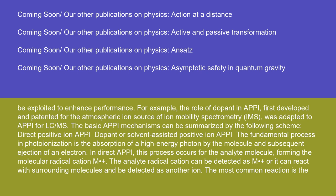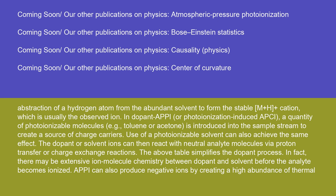For example, the role of dopant in APPI — first developed and patented for the atmospheric ion source of ion mobility spectrometry (IMS) — was adapted to APPI for LC-MS. In direct positive ion APPI, photon absorption by the analyte molecule forms the molecular radical cation M+•, which can be detected as M+• or react with surrounding molecules. The most common reaction is the abstraction of a hydrogen atom from the abundant solvent to form the stable [M+H]+ cation, which is usually the observed ion in dopant APPI or photoionization-induced APCI.